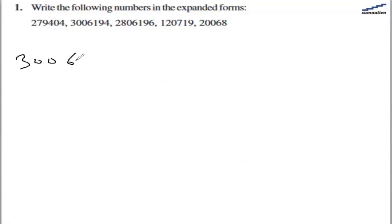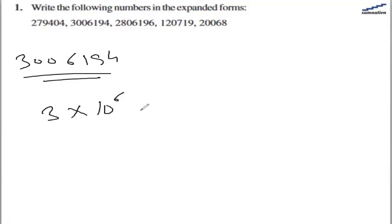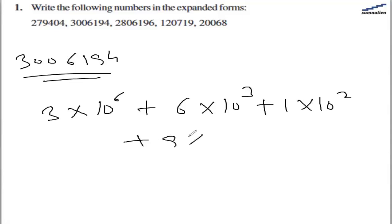In the second part we have this term. So let's write it down — 1, 2, 3, 4, 5, 6. So we have 3 multiplied by 10 raised to power 6, then 6 multiplied by 10 raised to power 3, then 1 multiplied by 10 raised to power 2, then 9 multiplied by 10 raised to power 1, and 4 multiplied by 10 raised to power 0. So this will be the expanded format for this number.